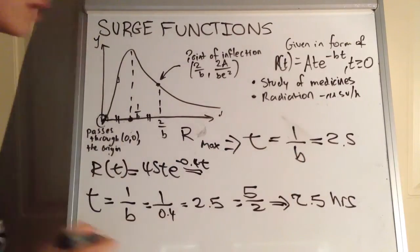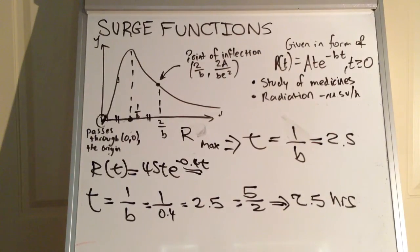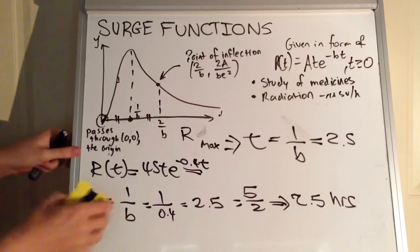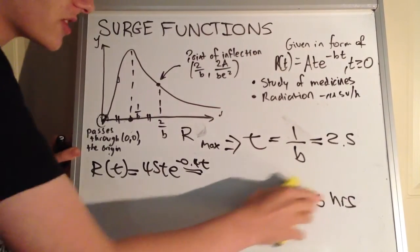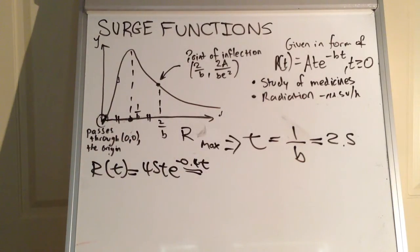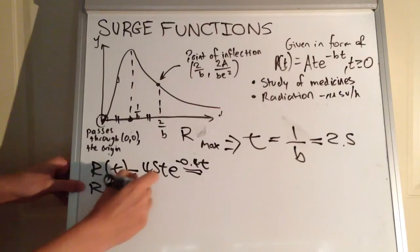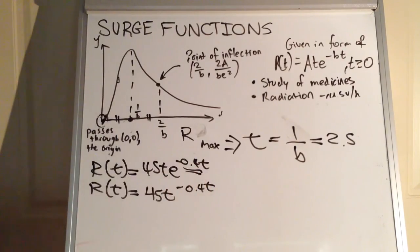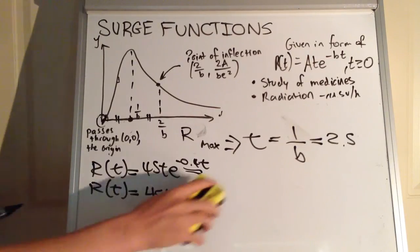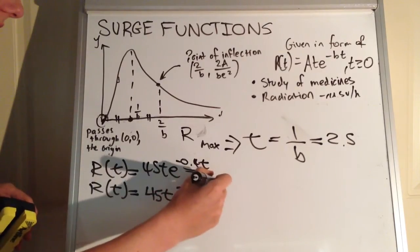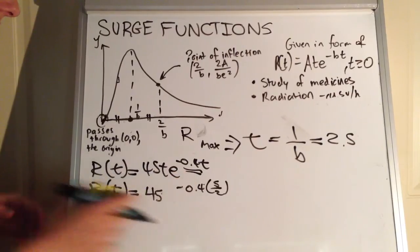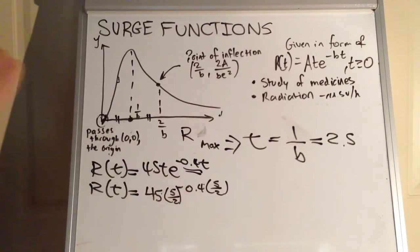Now we work out the exact level of radiation. The word 'exact' means we need a true representation, not a decimal approximation. We substitute t = 5/2 into R(t) = 45t·e to the power of negative 0.4t. So we get 45 times 5/2 times e to the power of negative 0.4 times 5/2. We can rewrite 0.4 as 4/10. The exponent becomes negative 4/10 times 5/2.